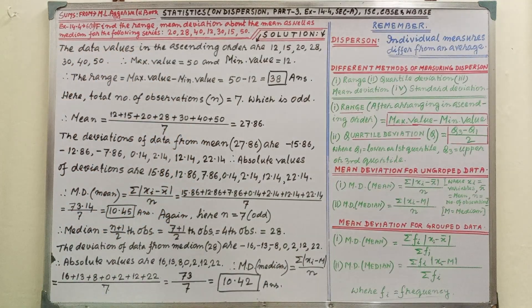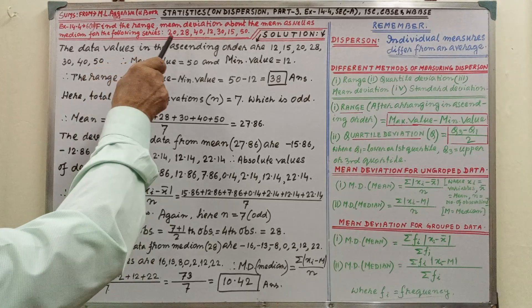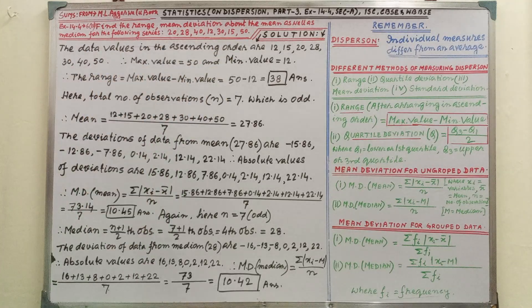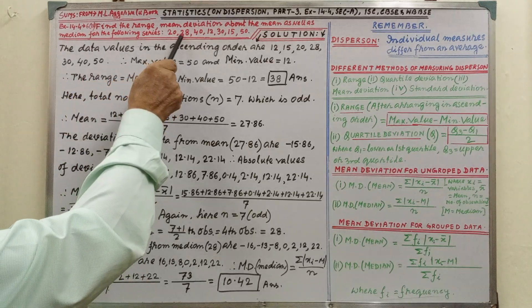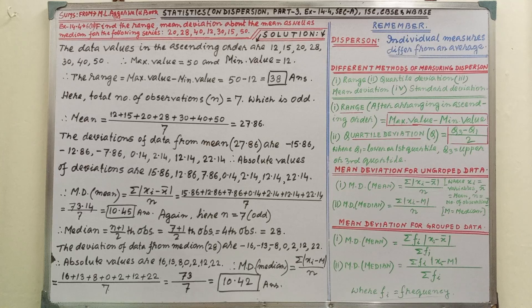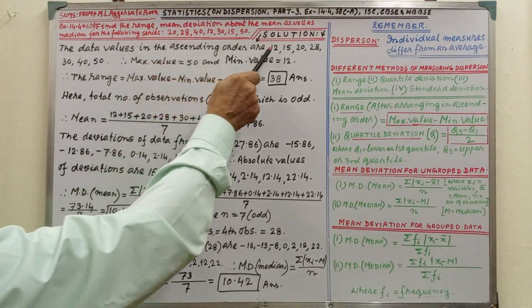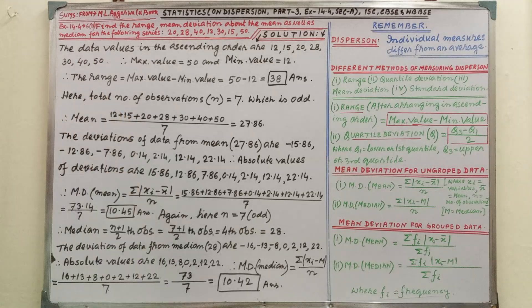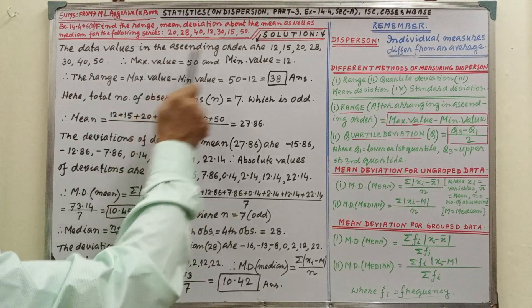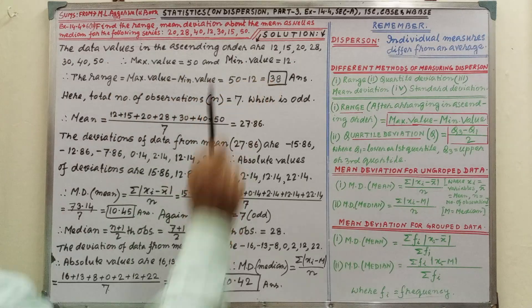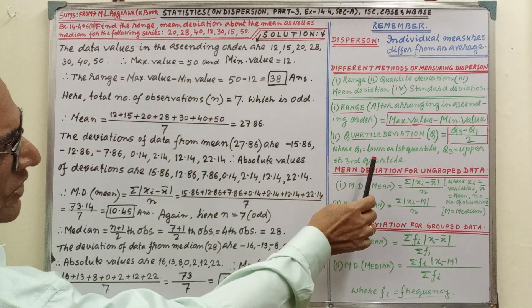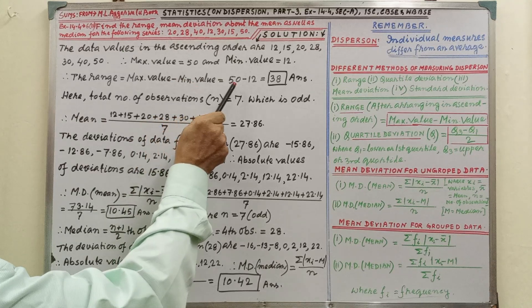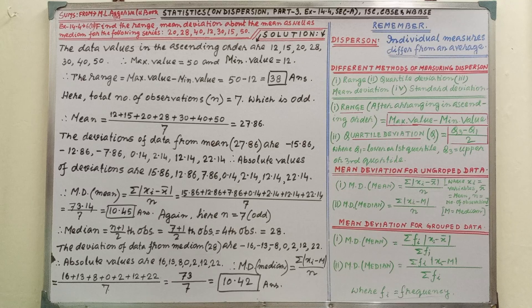Then pay your attention on the solution. Find the range mean deviation about the mean as well as median for the following series. The data values in ascending order. This is given the data. By arranging we are getting that is 12, 13, 20, 28, 30, 40 and 50. The maximum value that is 50 and minimum value that is 12. So range by applying the formula that is maximum value minus minimum value, maximum 50 minimum 12. So by calculation it is coming 38.